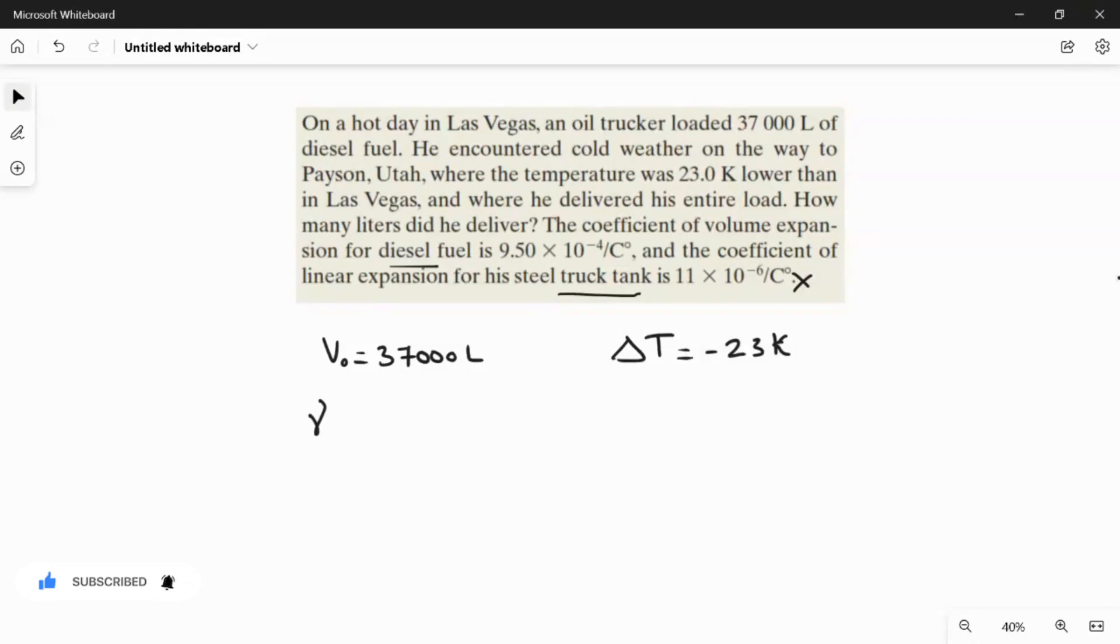So what is this value? The gamma value - that is the volume expansion coefficient. Here we're going to take γ = 9.5 × 10⁻⁴ per Celsius degree.